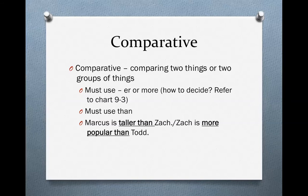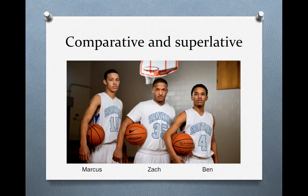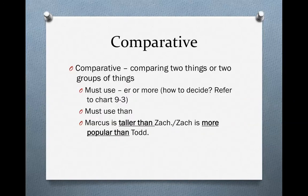Let's look at some examples. Marcus is taller than Zach. Notice that we take the adjective 'tall' and we add -er to the end of it, and then we use the word 'than' — Marcus is taller than Zach. We could also say Zach is more popular than Ben. We take the adjective 'popular' and we add the word 'more' in front of it, and then we put 'than' at the end.